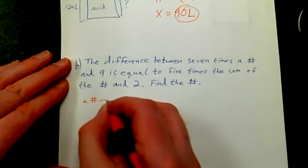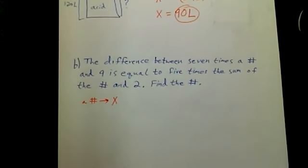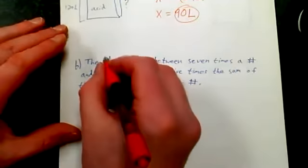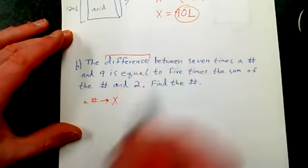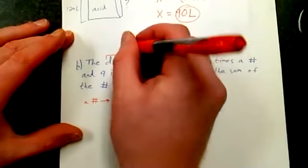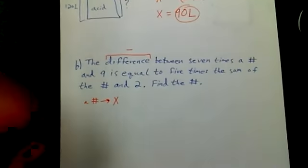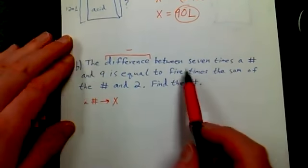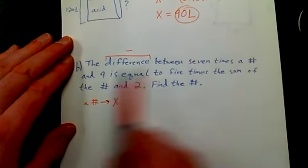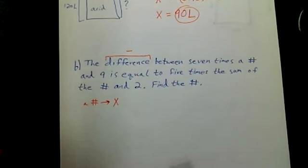So I'm going to let the number be X. And now we've got to pick out these key words. "Difference" - think back to your algebra - that means minus. Between seven times a number and nine. So really what I want to know is how do I write this part: the difference between seven times a number and nine.